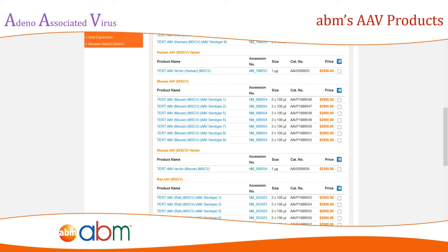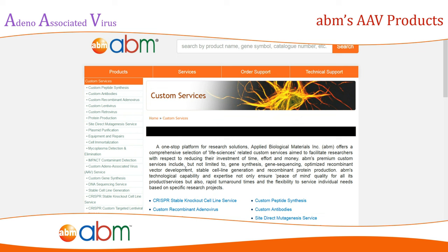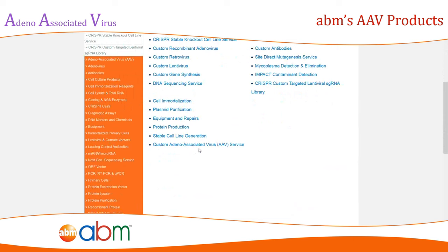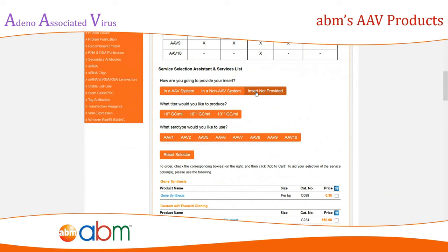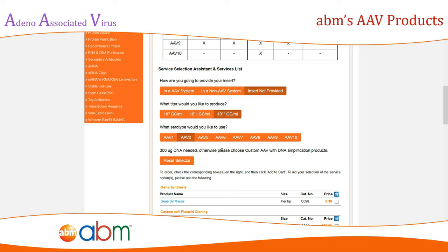Having difficulty finding your gene of interest? Try our AAV custom service option. From our home page, click on custom services and from there go to custom adeno-associated virus service. From this page, you can select the method of providing your gene of interest, the titer of AAV you would like to receive, and the serotype of the AAV virion. This will tailor the list of available services to your specific needs.